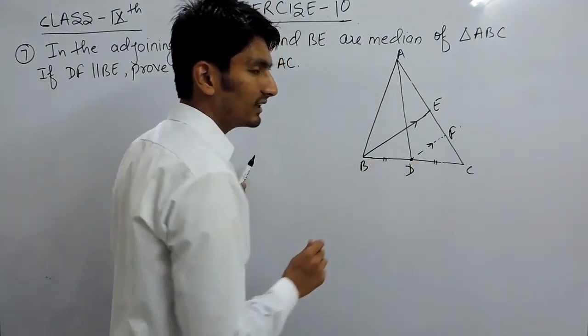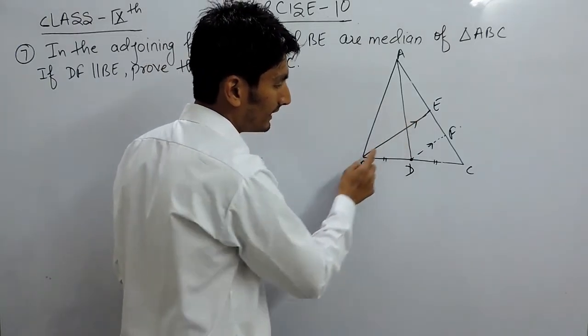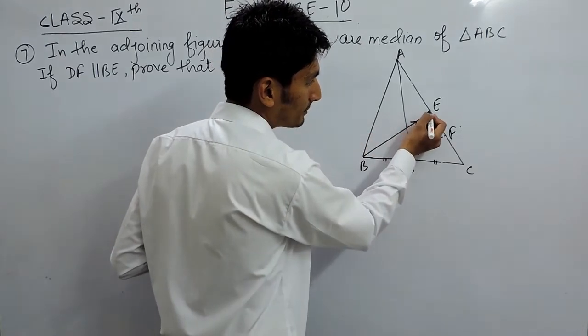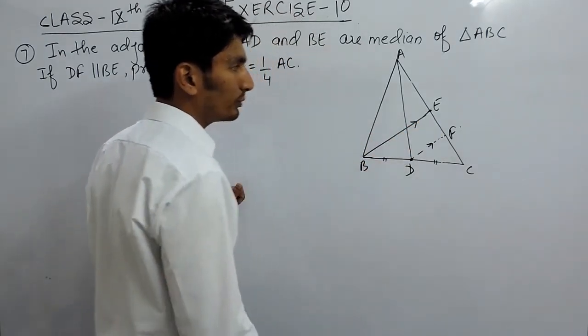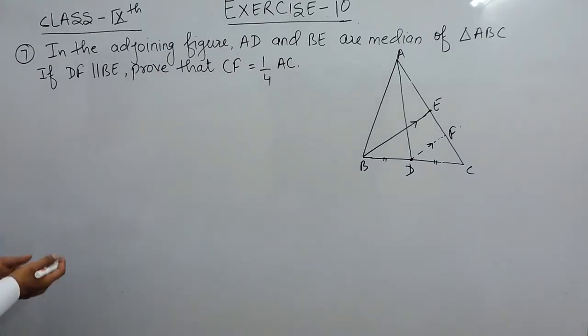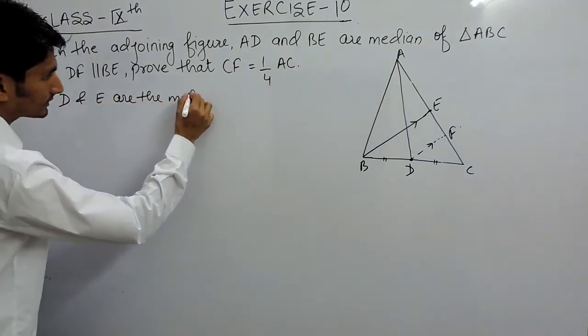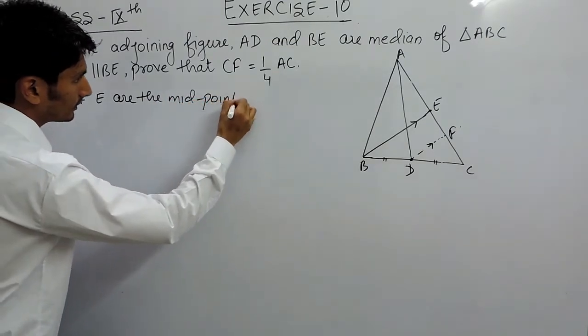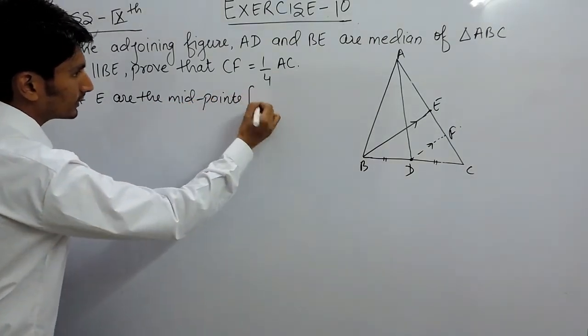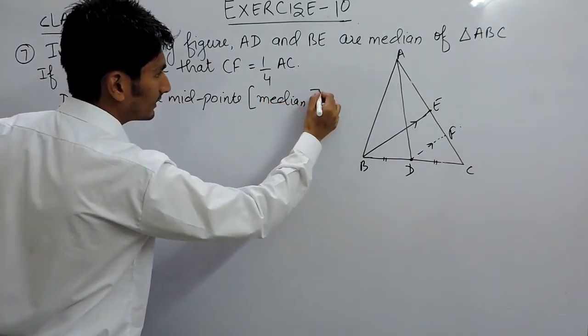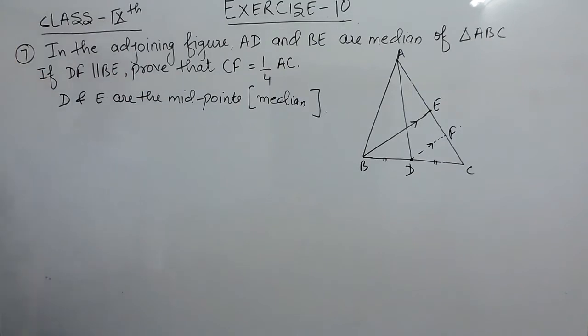Similarly, if BE is the median, BE should meet AC at its midpoint. So E again should be the midpoint. It is given to you. So we can conclude that D and E are the midpoints. This is because they are the meeting point of median at this side, and this is given to you.